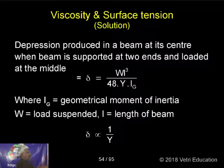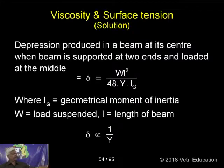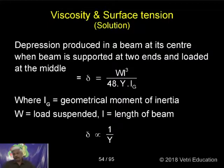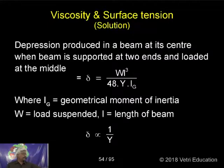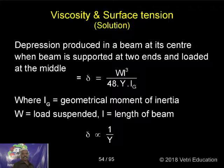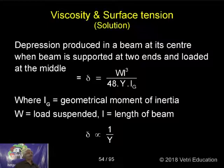That is also what we know, because I have given a formula for depression. Kindly go through my notes — the same answer I have given. Therefore W is constant, l is constant, 48 is constant, IJ is also constant. Therefore delta is inversely proportional to...